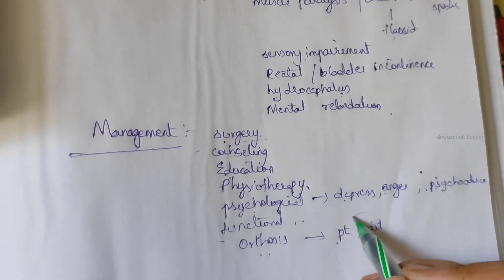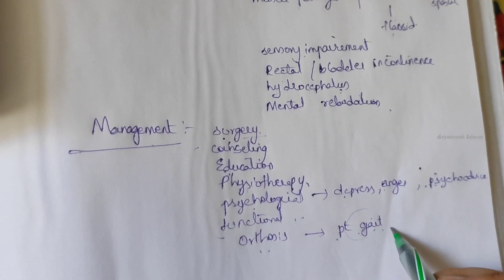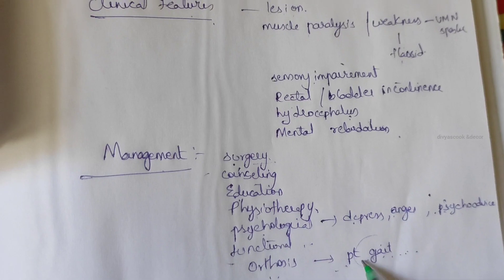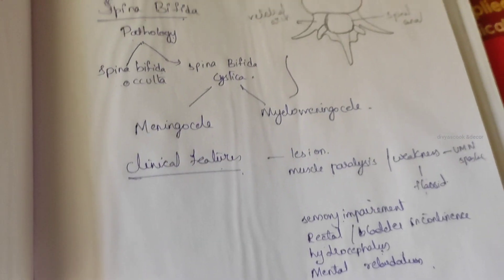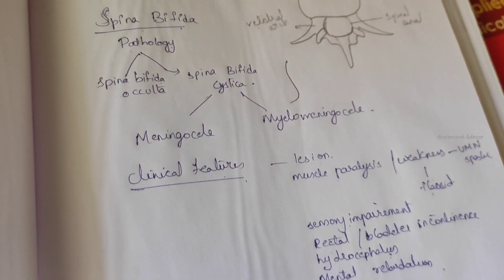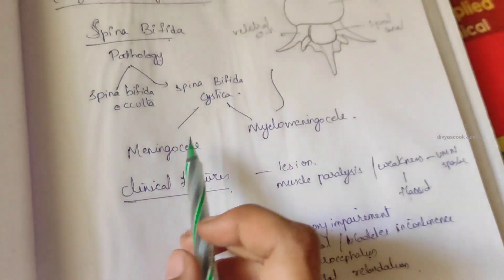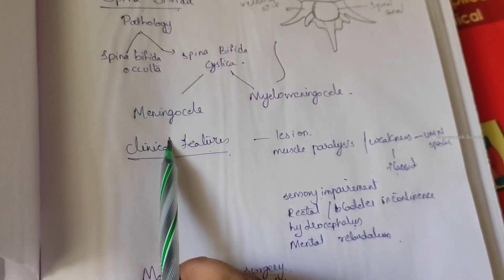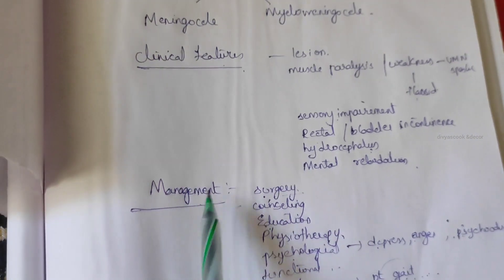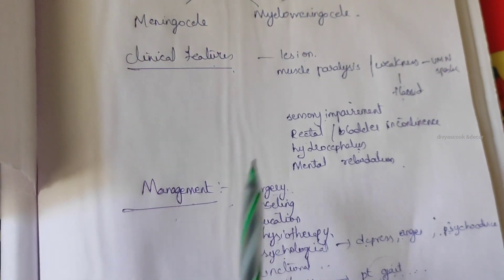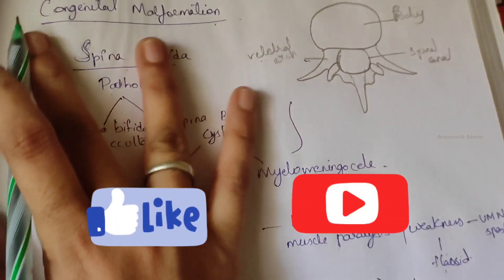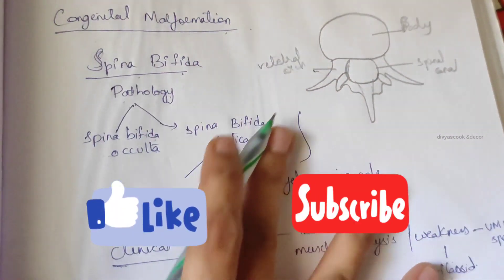Orthoses help the patient walk and move properly. These are the main aspects of spina bifida — pathology, clinical features, and management. I hope you understood this topic. Thank you for watching this video.